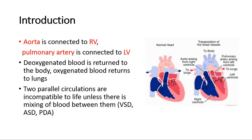In this congenital heart defect called transposition of great arteries, the two great arteries — the aorta and the pulmonary artery — have their positions exchanged. So it becomes abnormal, where the aorta is connected to the right ventricle and the pulmonary artery is connected to the left ventricle. This causes deoxygenated blood to be returned to the whole body, and oxygenated blood in the aorta goes to the lungs.